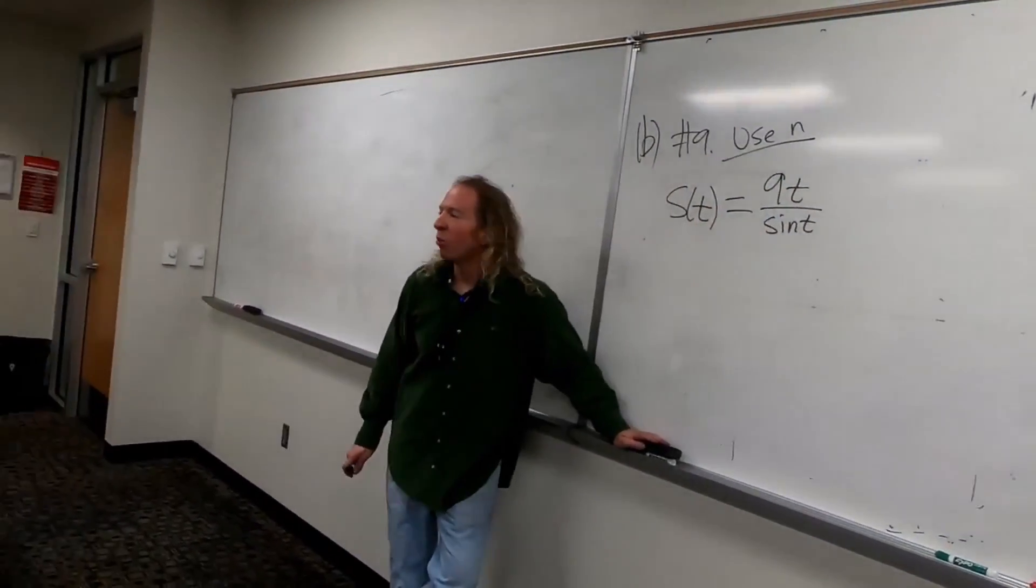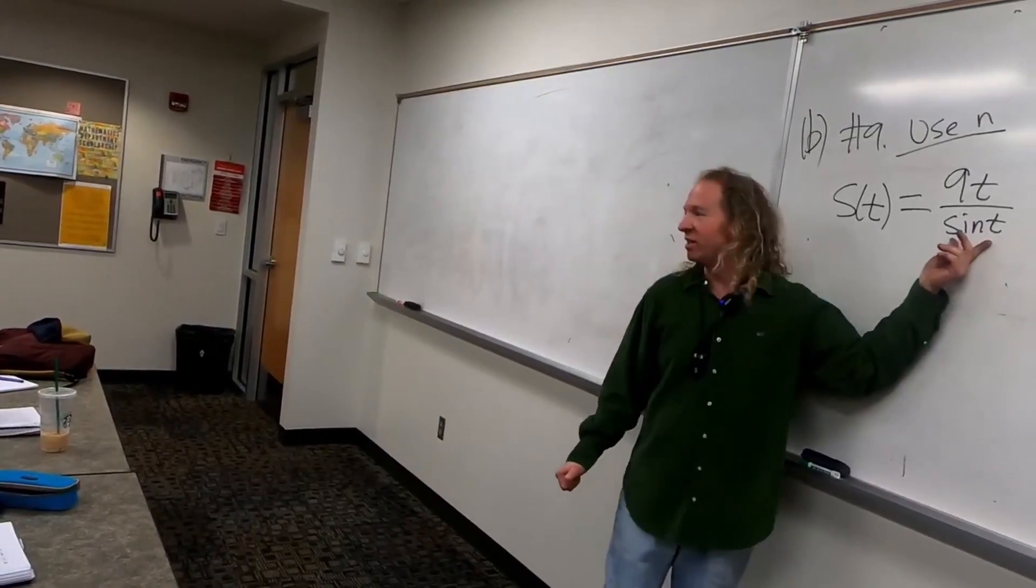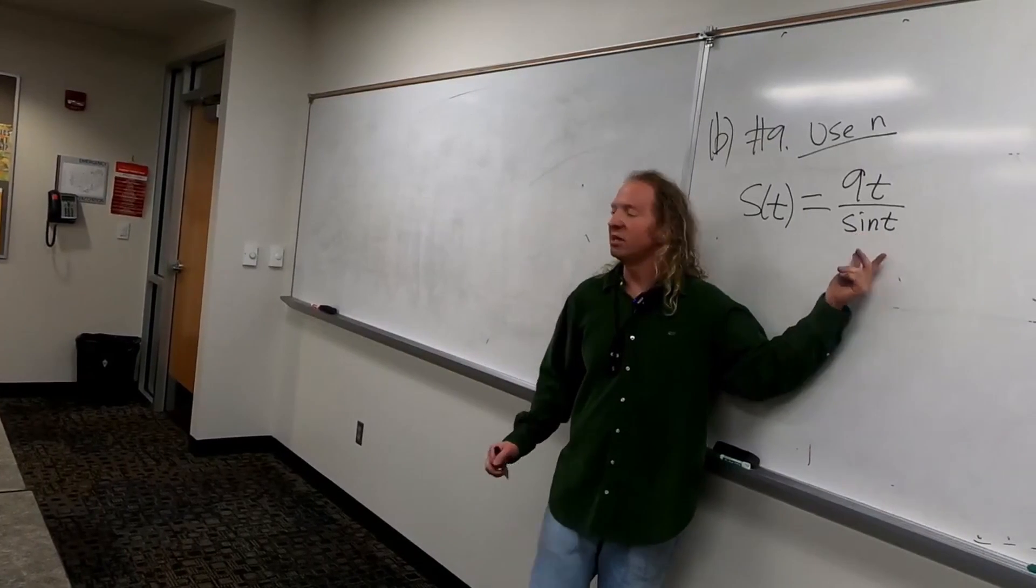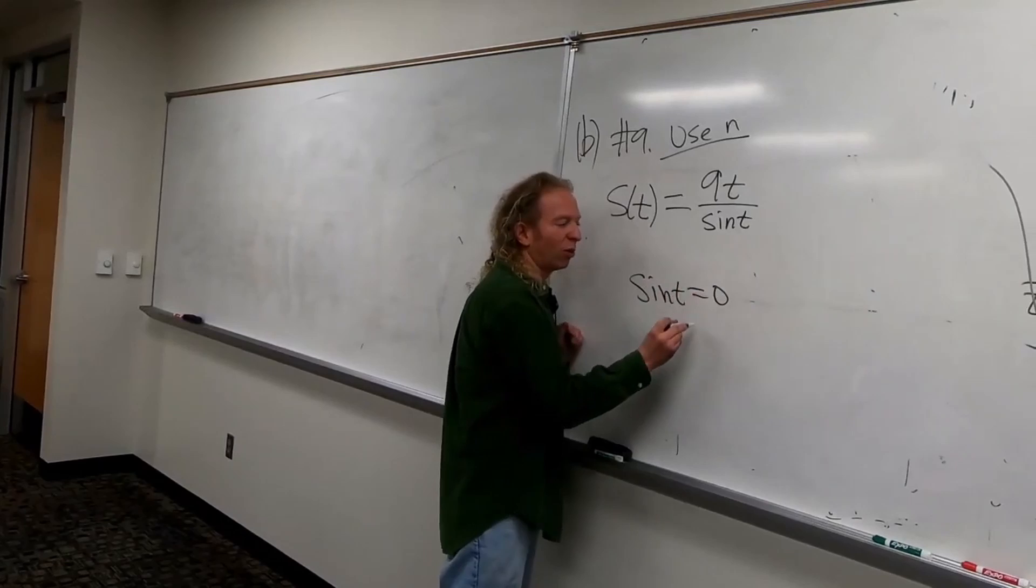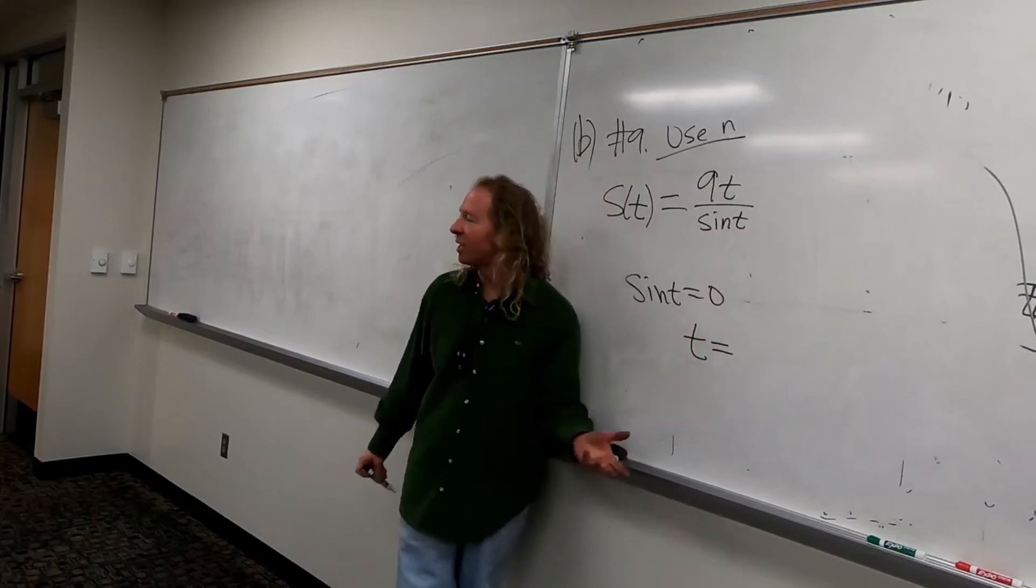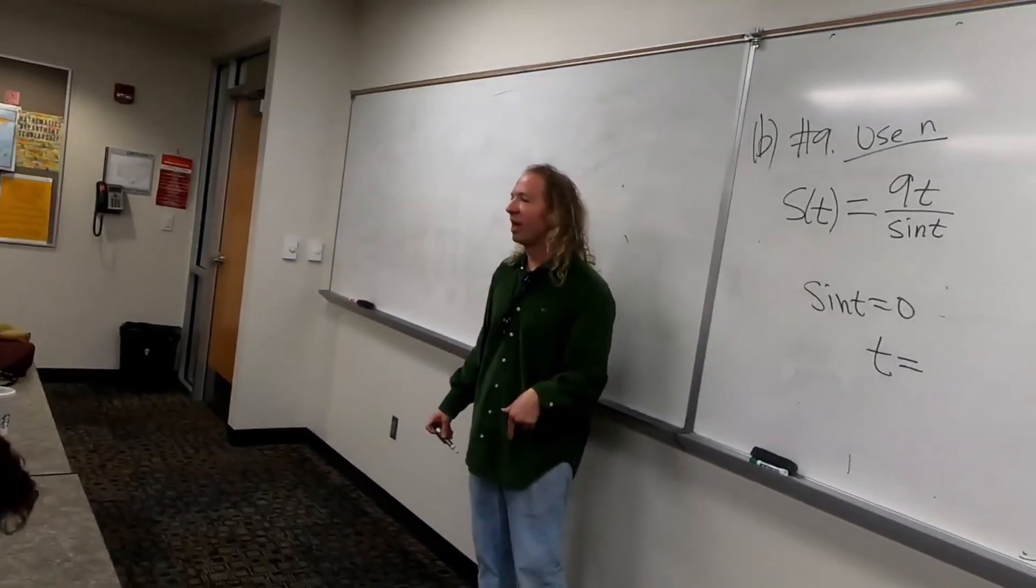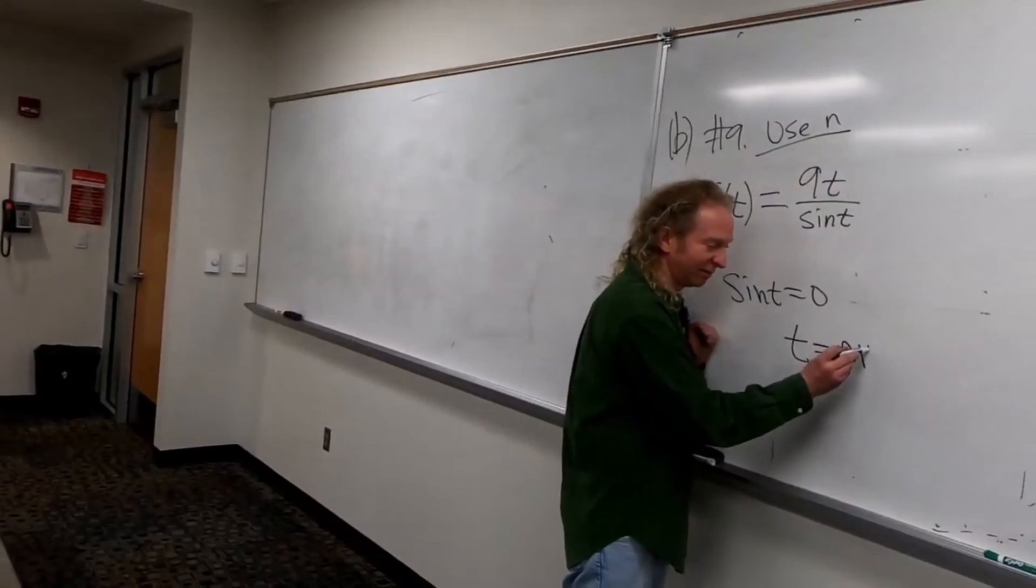So same thing. We're looking for the vertical asymptotes. So we think about when sine T is equal to zero. Right? Sine T is equal to zero when T is equal to - well, it's K pi normally, right? But we have to use N. So it'll be N pi. That's it.